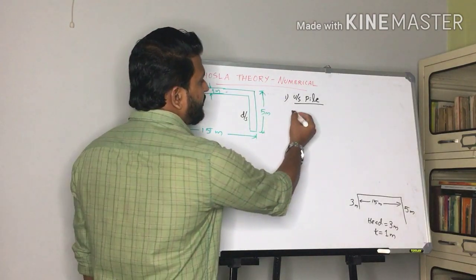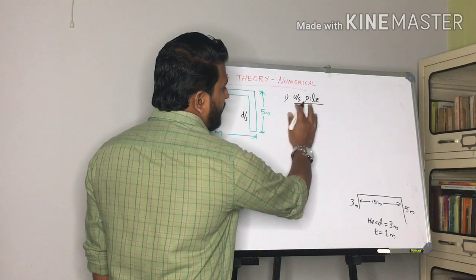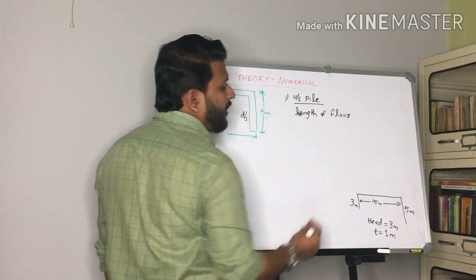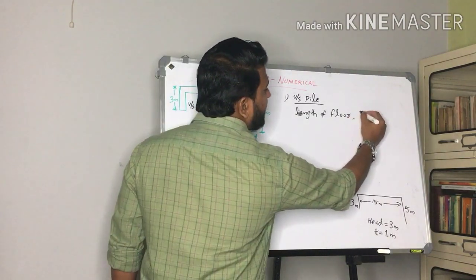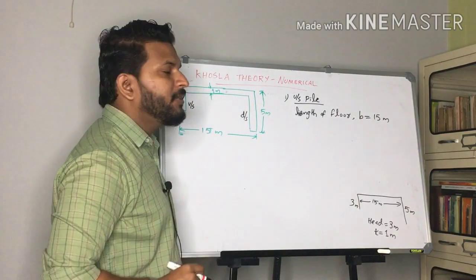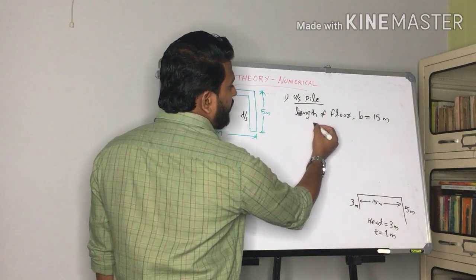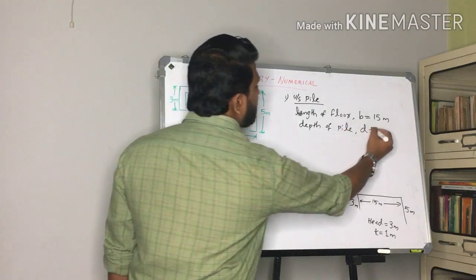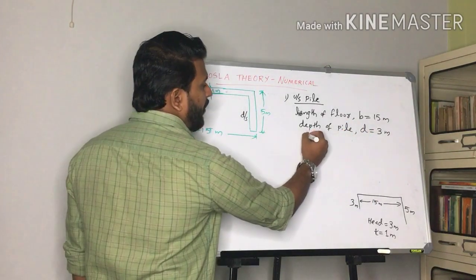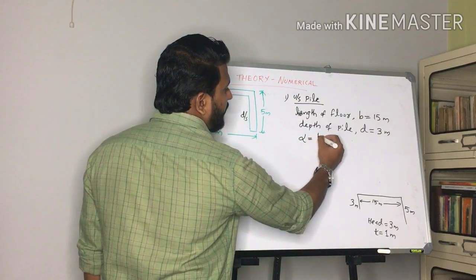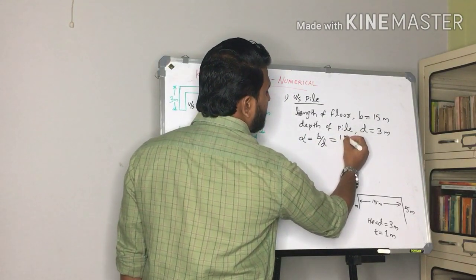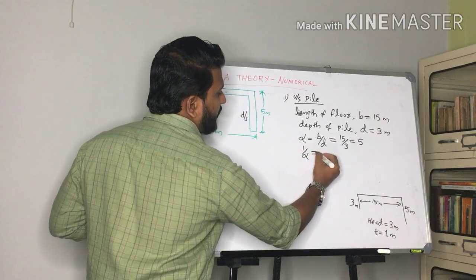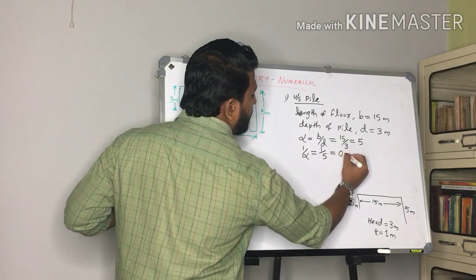Let's start with the upstream pile. We have the following data: the length of the floor B is 15 meters, and the depth of the pile D for upstream is 3 meters. Now, alpha is B divided by T, so 15 divided by 3 equals 5. Then 1 by alpha equals 1 by 5, which equals 0.2.